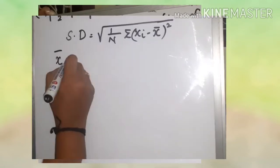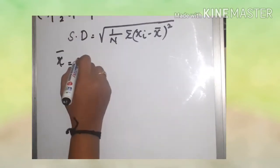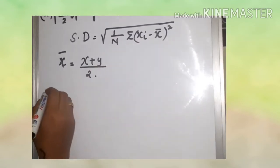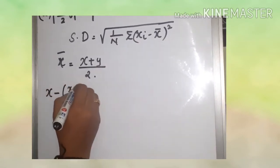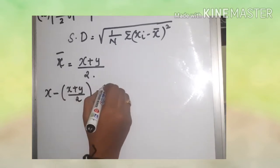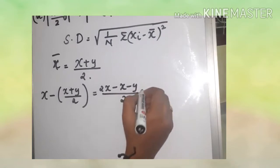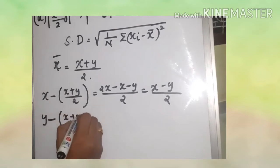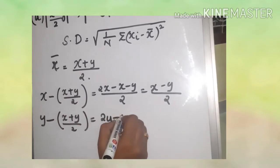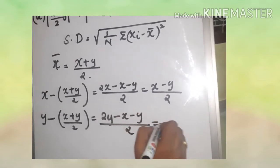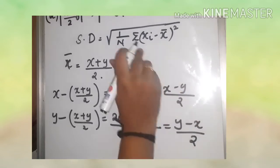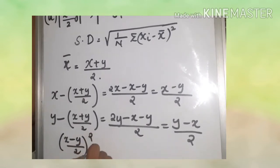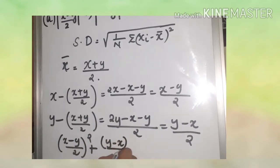This is the process: x and y, x plus y by 2. This is the observation of x minus x plus y by 2. Then 2x minus x minus y by 2. This observation is y minus x plus y by 2, the whole square, plus y minus x by 2, the whole square.